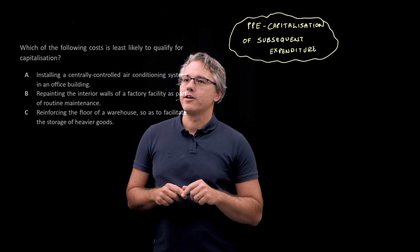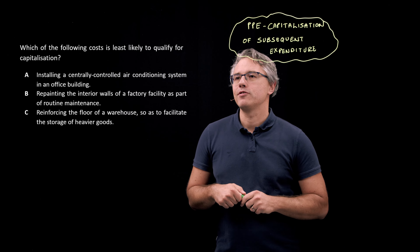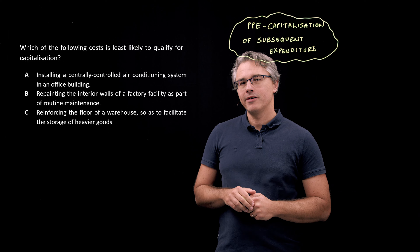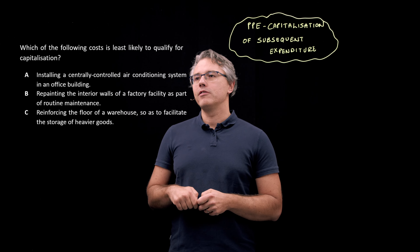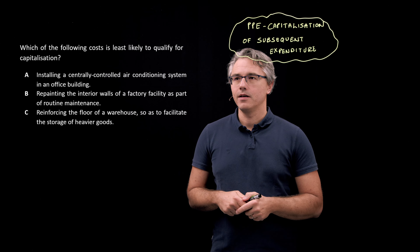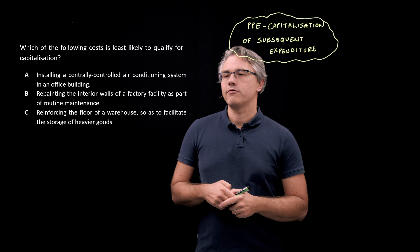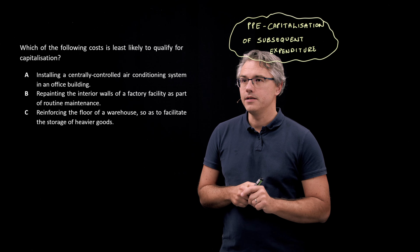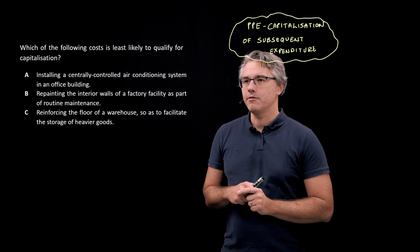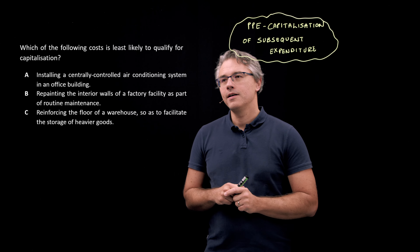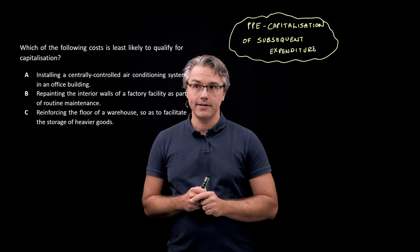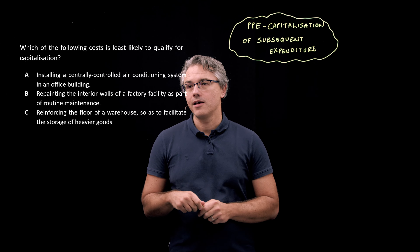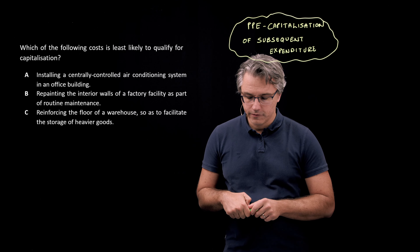This is the question I want us to have a go at. Which of the following costs is least likely to qualify for capitalization? A: Installing a centrally controlled air conditioning system in an office building. B: Repainting the interior walls of a factory facility as part of routine maintenance. Or C: Reinforcing the floor of a warehouse so as to facilitate the storage of heavier goods.